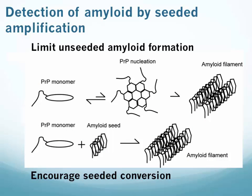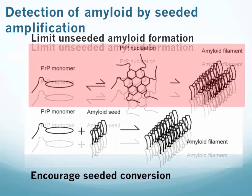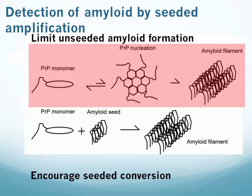Detection of amyloid by seeded amplification is a lot like what happens in vivo in the disease process. There are two types of prion diseases that animals or humans could get. One is a spontaneous disease where a PRP monomer misfolds and forms a nucleation event, which could then propagate to form amyloid filaments — this process is rare and not favored in vivo. Another type is a seeded amyloid event where someone acquires a prion seed, and that seed recruits more monomer and forms amyloid filament, going on to infect more cells. That process is more rapid with significantly shorter disease courses. In the RT-QUIC assay, those same two reactions occur — a potential for an unseeded reaction and a potential for a seeded reaction — and we want to limit the unseeded amyloid formation reaction.